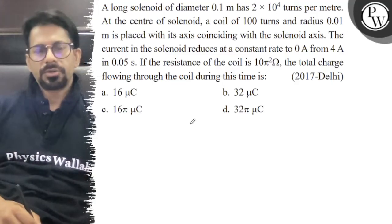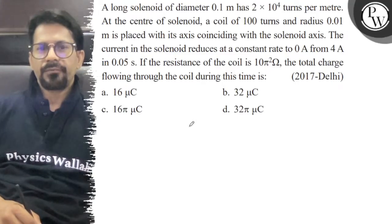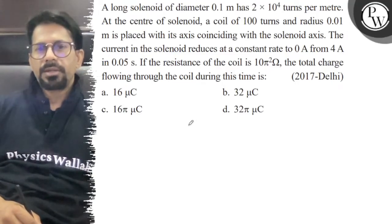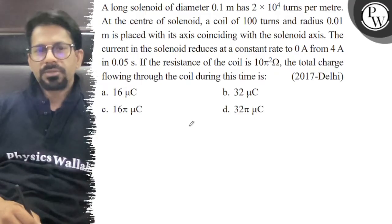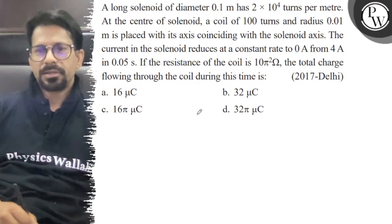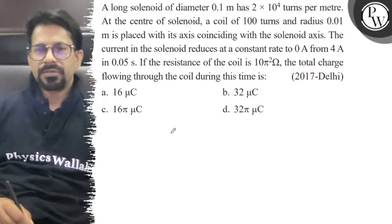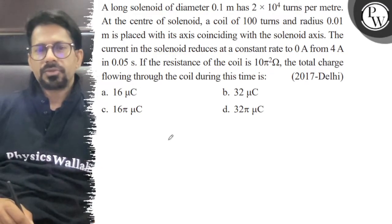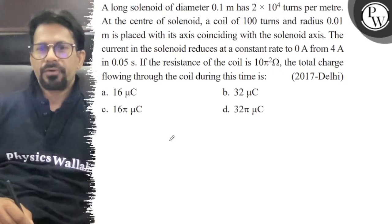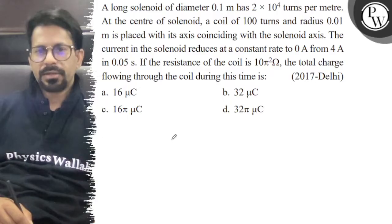Hello everyone, let's see the question. A long solenoid of diameter 0.1 meter has 2×10⁴ turns per meter. At the center of the solenoid, a coil of 100 turns and radius 0.01 meter is placed with its axis coinciding with the axis of the solenoid. The current in the solenoid reduces at a constant rate to 0 ampere from 4 ampere in 0.05 second.